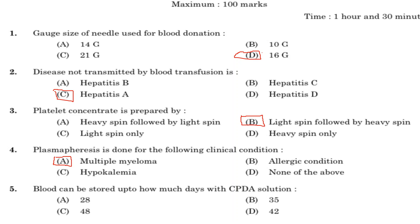Fifth question: blood can be stored up to how many days with CPDA solution. Option A: 28. Option B: 35. Option C: 48. Option D: 42. Answer is Option B, 35 days. For CPDA, it can be stored up to 35 days. In the case of CPD, it is 21 days. ACD is also 21 days.